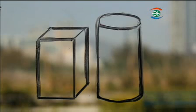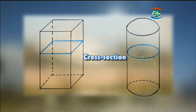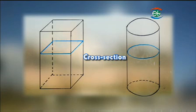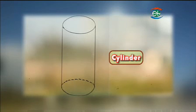These are prisms and cylinders. The base and the top of the prism are identical and parallel to each other. If we take a plane parallel to the base and the top that cuts across the prism at any point, the cross section will be identical to and have the same area as the top and the base. In other words, the prism is a solid with a uniform cross section. A prism with a rectangular top and base is called a rectangular prism, and a prism with a circular top and base is called a cylinder.